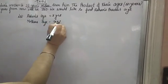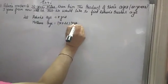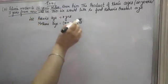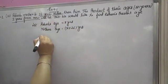Now see what they've said, the product of their age is 3 years from now. This is the present age, so 3 years after this, Rohan's age will be...